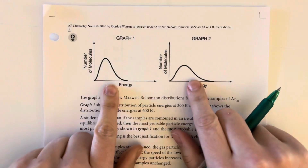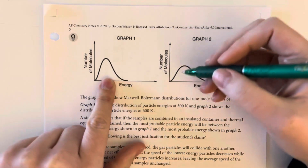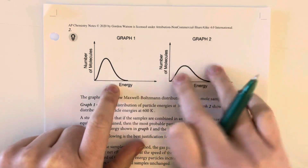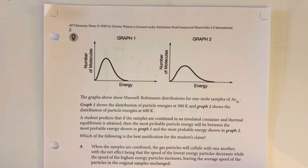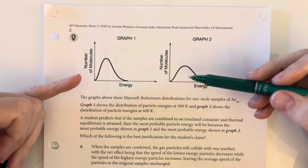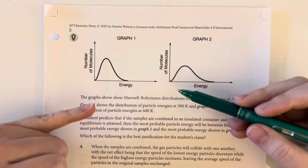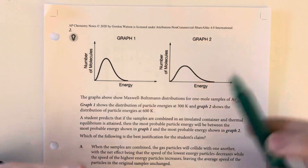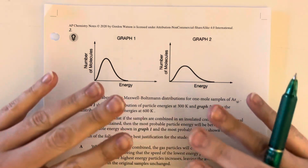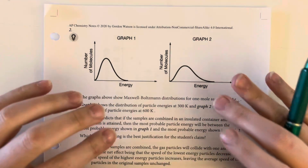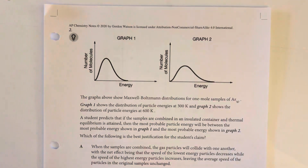We are saying that if we were to combine these two samples and they reach equilibrium, we will end up with something in the middle between these two graphs. That is going to be due to the collisions of the particles within these containers, which will redistribute the overall energy of each container into some net equilibrium.